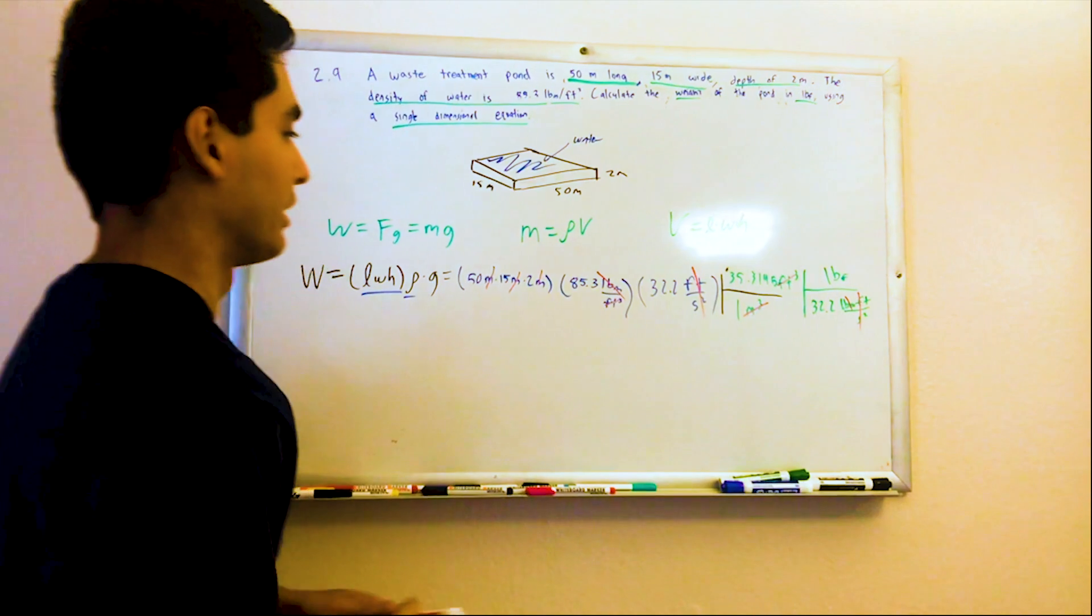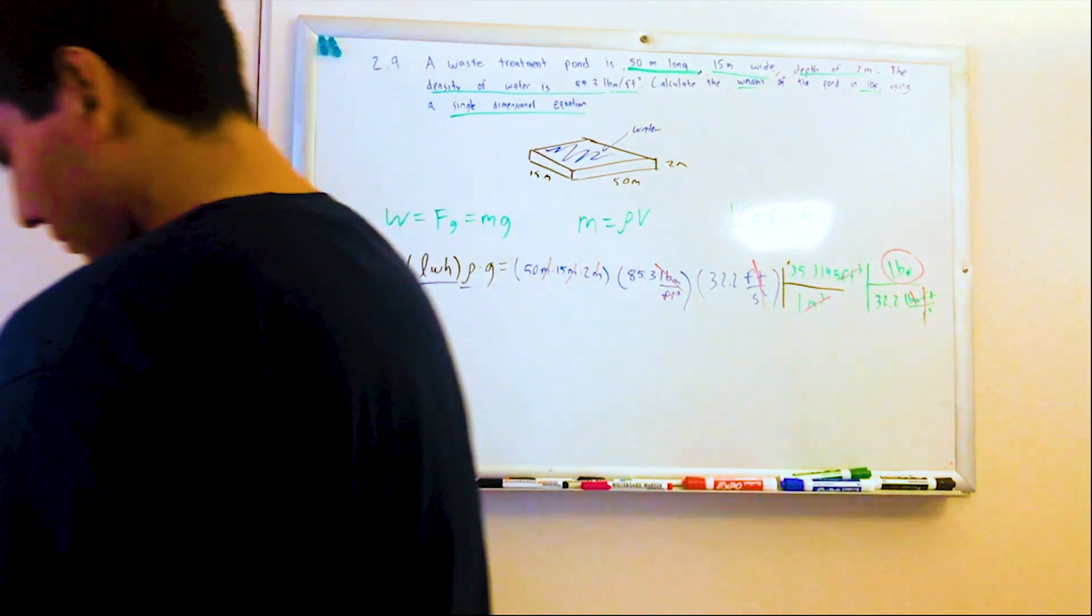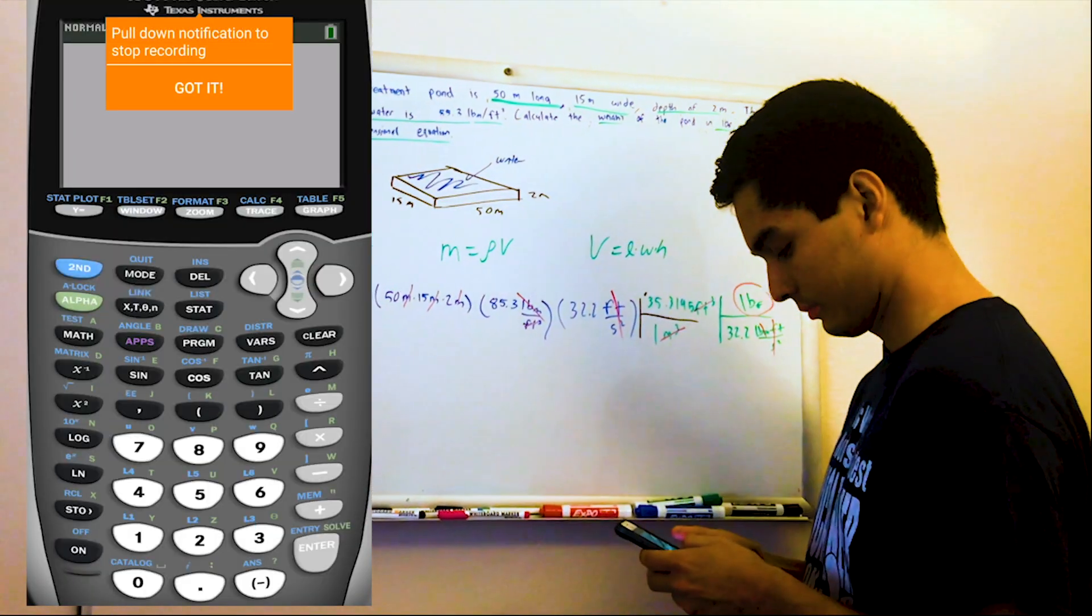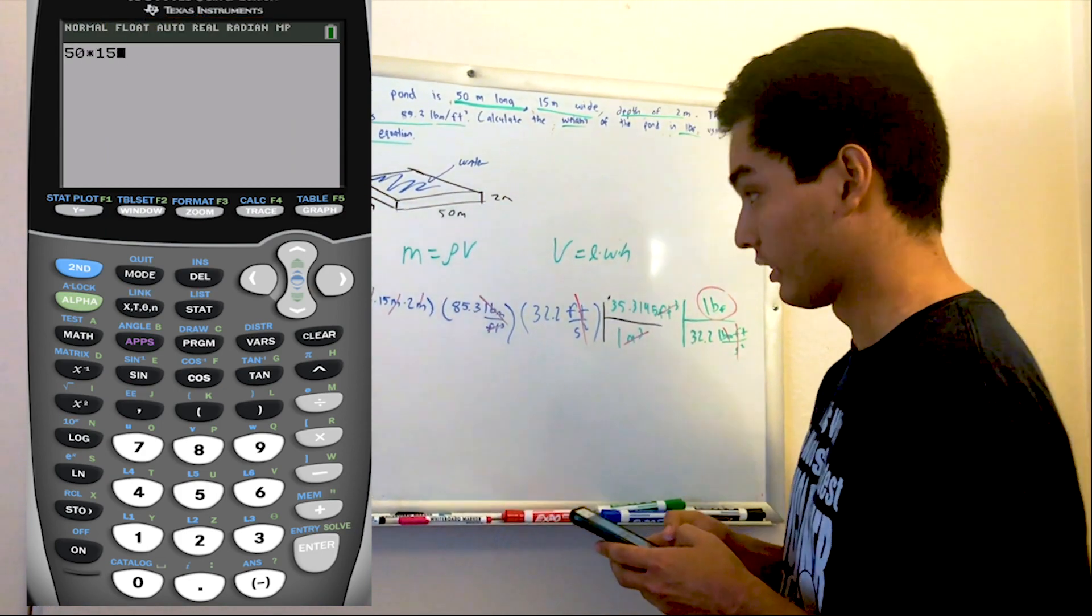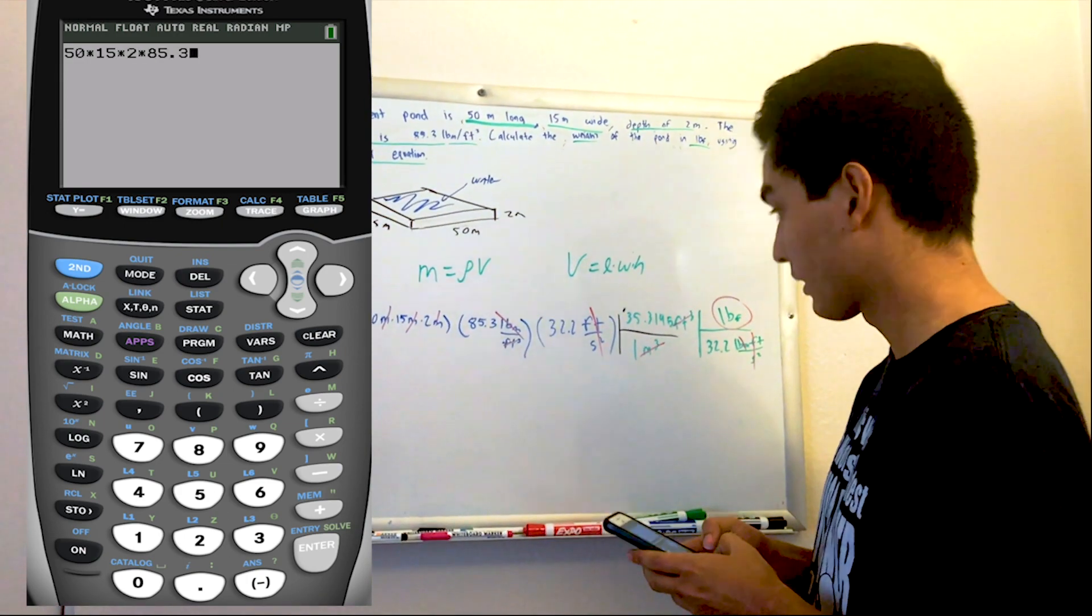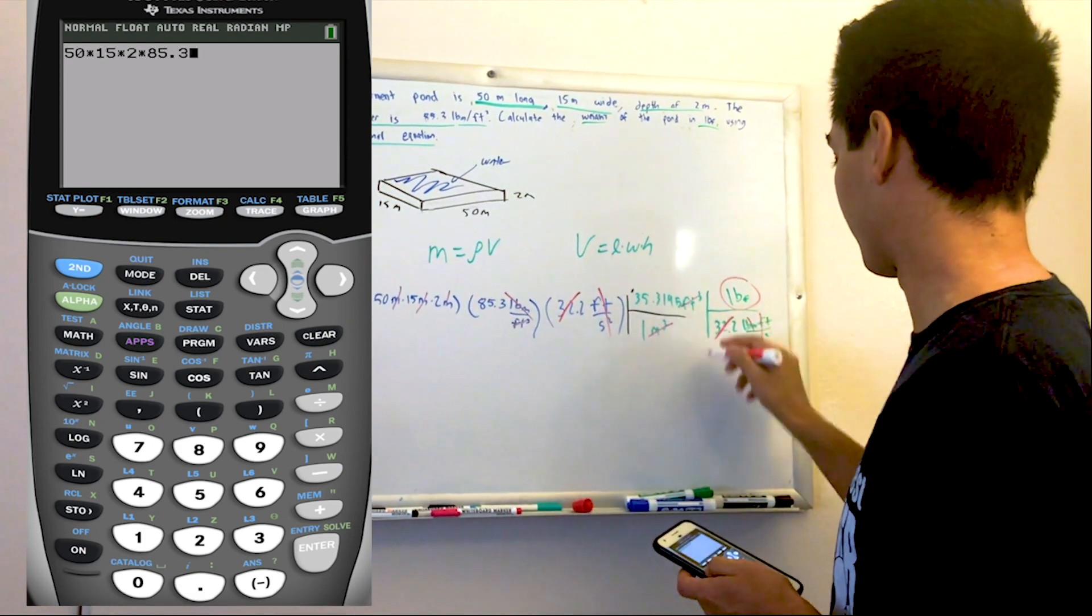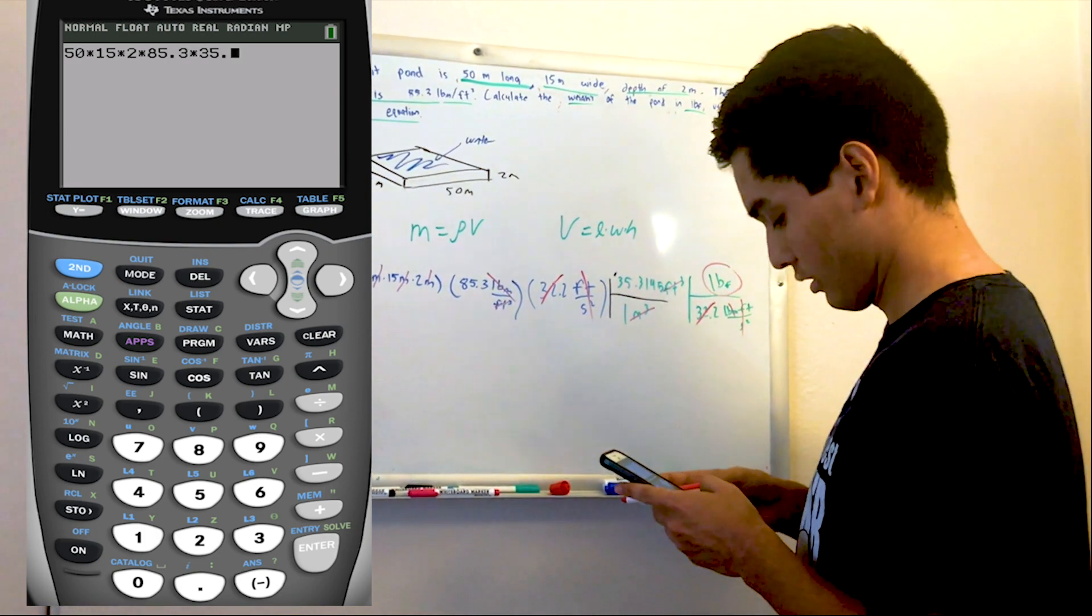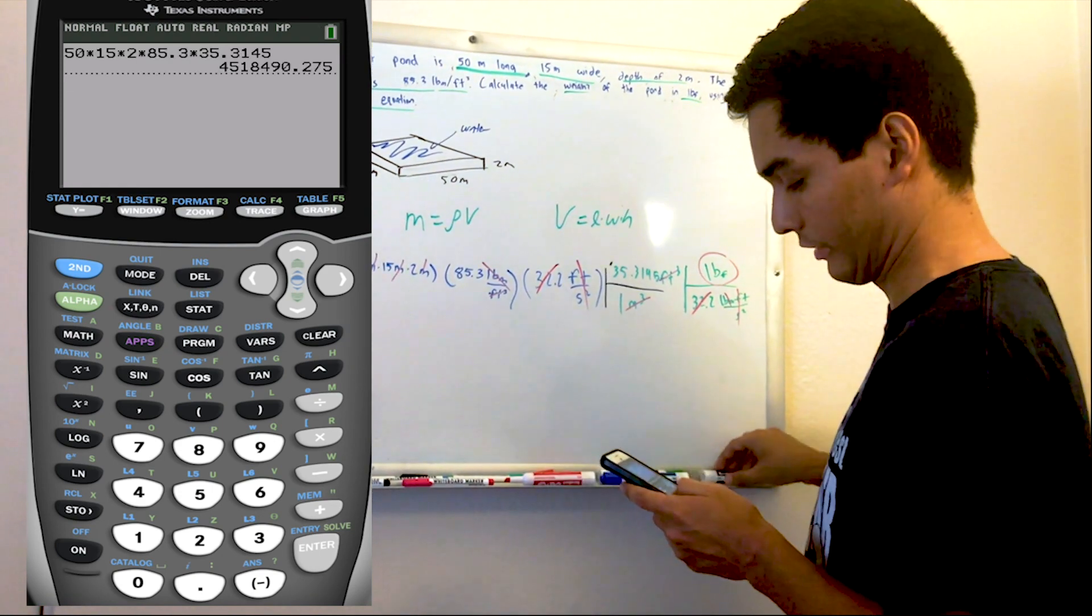So if we plug this in, I got my trusty TI. Oh, that rhymed. All right, so I'm going to do 50 times 15 times 2 times 85.3. Well, the 32.2 actually cancels out, so I'll cancel out that guy and just multiply by 35.3145. And our answer is—well, that's a hefty answer.